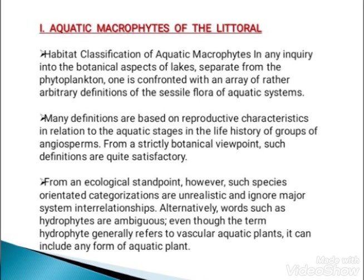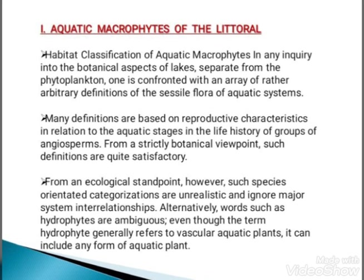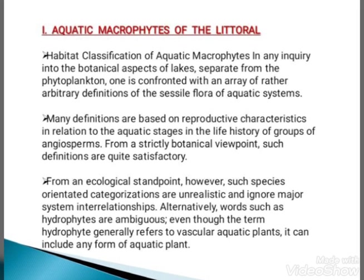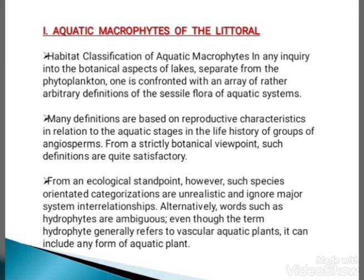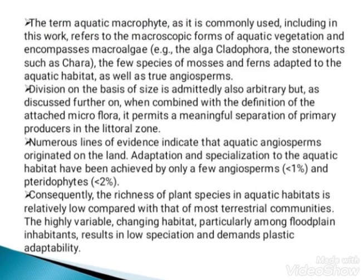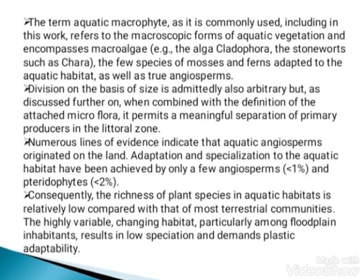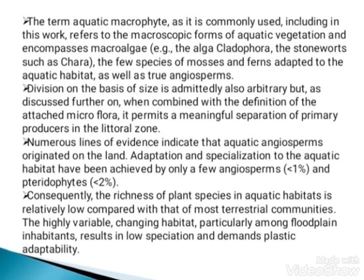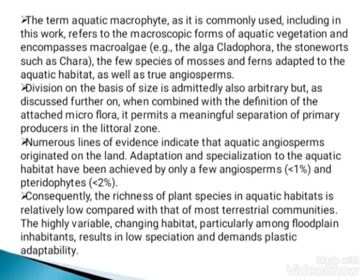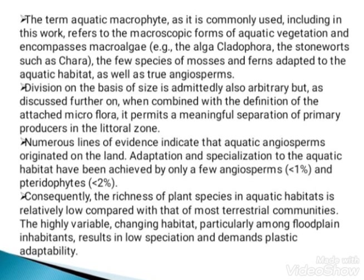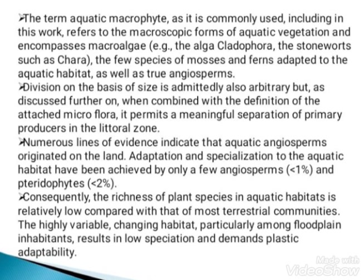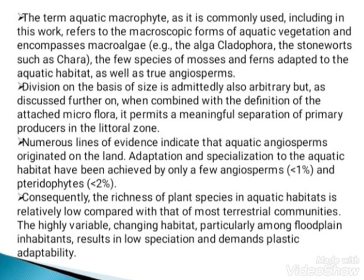Alternatively, words such as hydrophytes are ambiguous. Even though the term hydrophytes generally refers to vascular aquatic plants, it can include any form of aquatic plants. The term aquatic macrophytes, as commonly used including in this work, refers to a macroscopic form of aquatic vegetation and encompasses microalgae, the few species of mosses and ferns adapted to the aquatic habitat, as well as true angiosperms. Division on the basis of size is admittedly arbitrary, but when combined with the definition of the attached macroflora, it permits a meaningful separation of primary producers in the littoral zone.